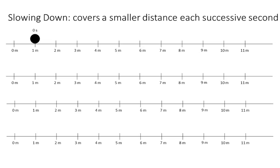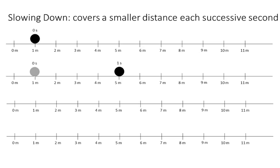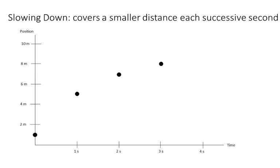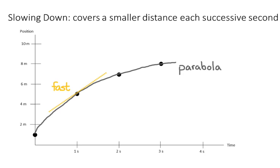Now let's look at slowing down. Something that is slowing down travels a smaller distance each successive second. If we started at one meter, after one second we may be at five meters — moving four meters. After the second second, maybe we're at seven meters — traveling two meters forward. Then after the third second, we've gone one meter. If we put those points on a graph, it makes a parabola shape. Drawing tangent lines, we can see we go from a high slope to a low slope — that's slowing down.